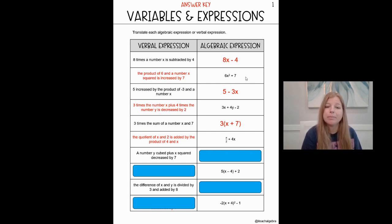So this says a number y cubed plus x squared. We know squared is the second power. Decreased by 7. All right. So let's see. That would be y to the third power plus x to the second power minus 7.